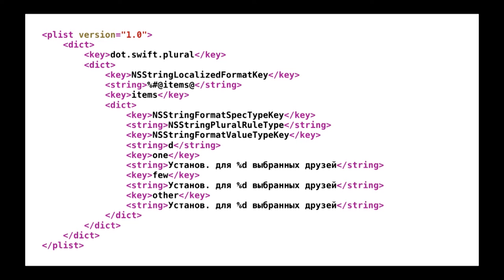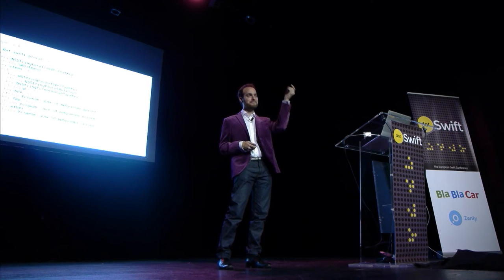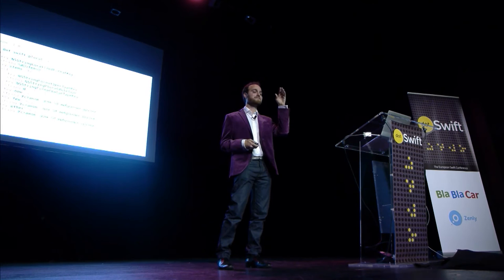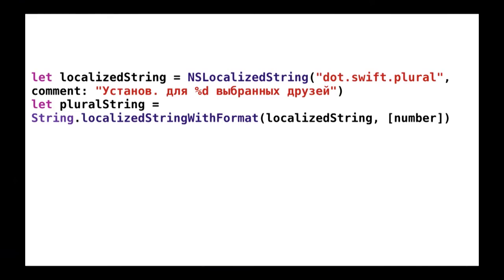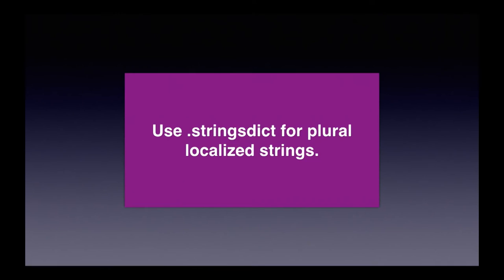Stringsdict is a plist file. It has keys just like NSLocalizedString, but they translate to sub-keys of one, many, others. The variations are one, two, few, many, and other. You fill that in and it handles all the logic for you. You still need to localize the string, then pass it to localizedStringWithFormat on String, and it will do all the formatting without you needing to handle all the different rules for different places. The tip: use stringsdict for plurals every time.